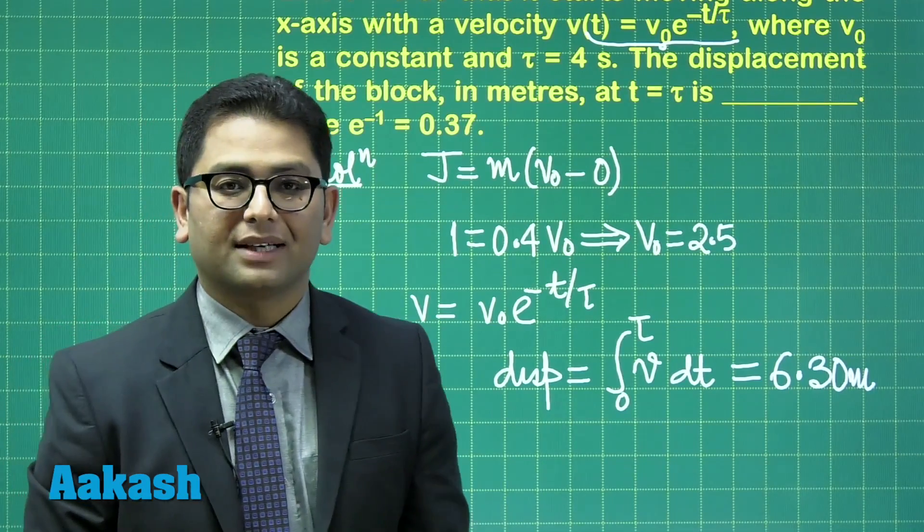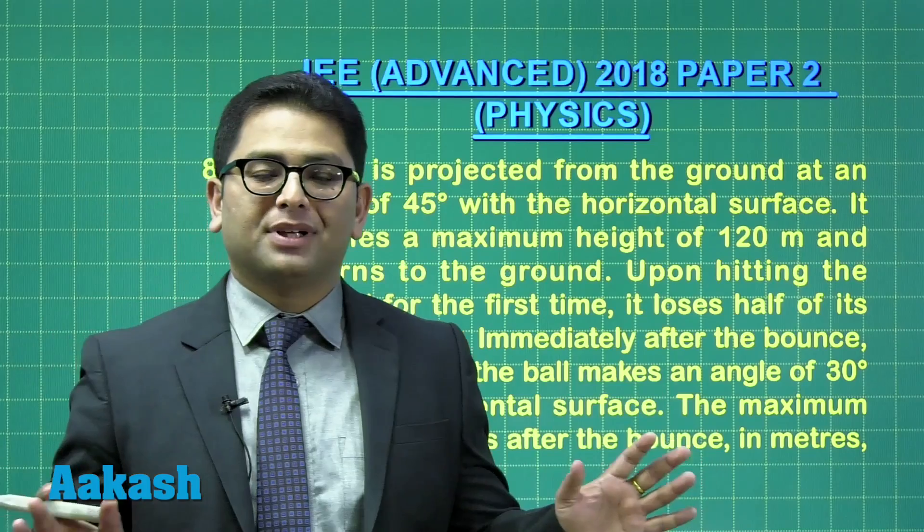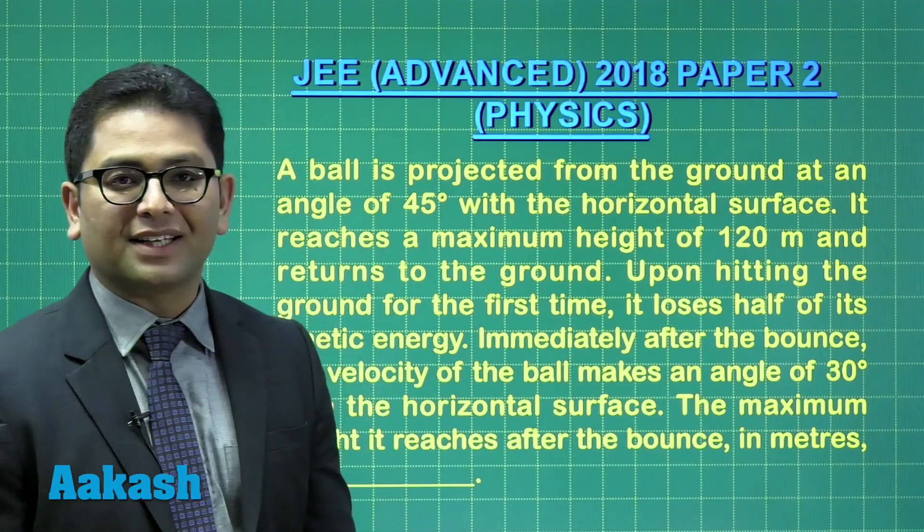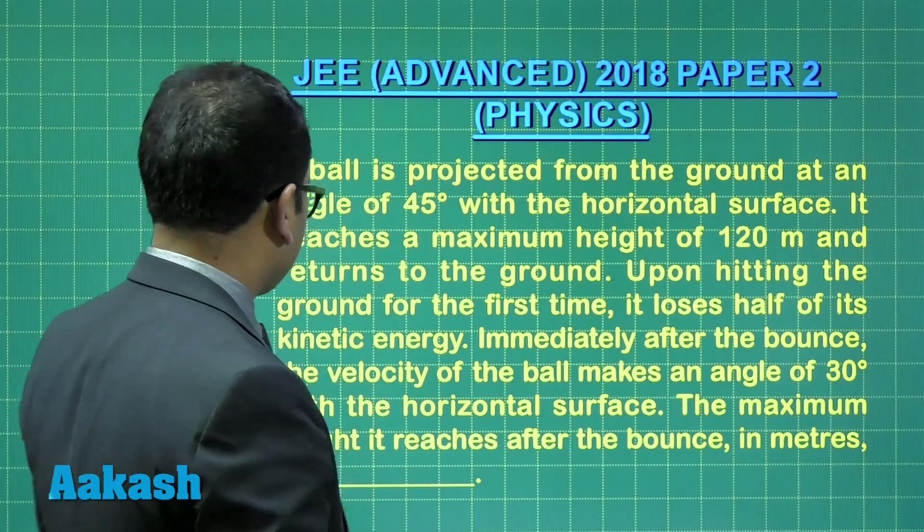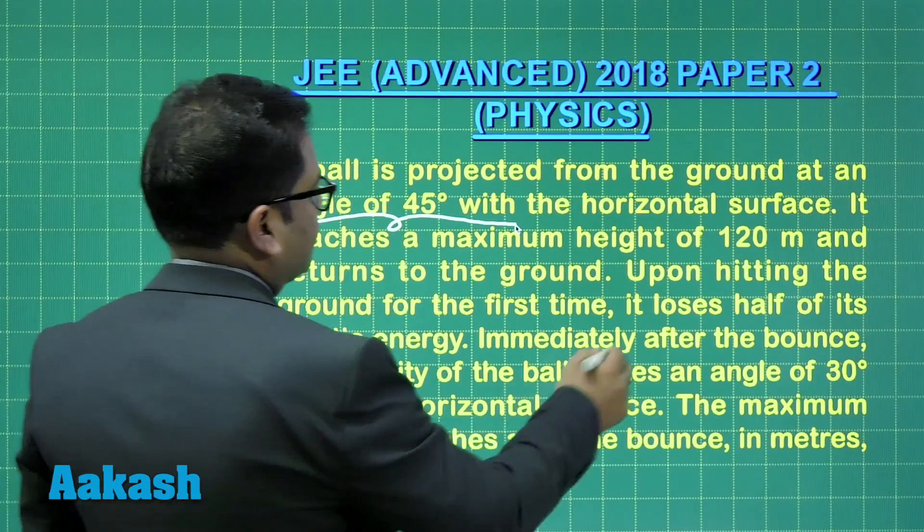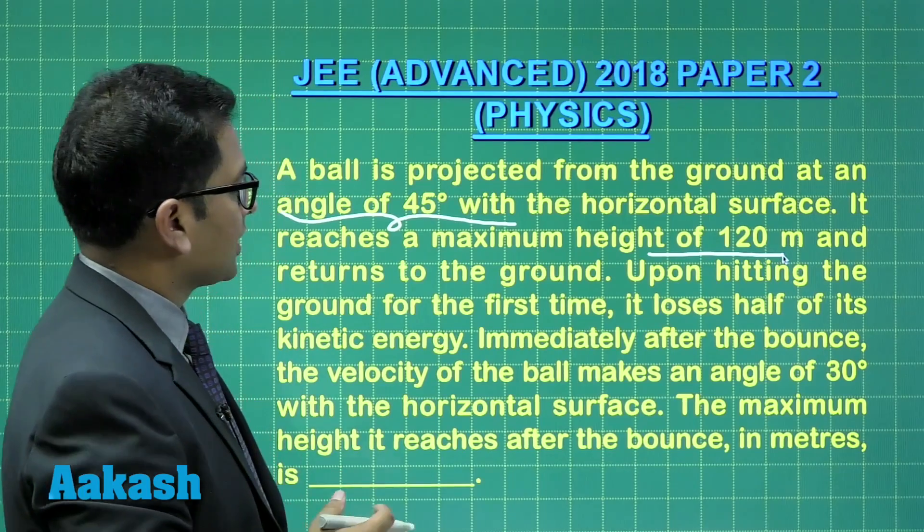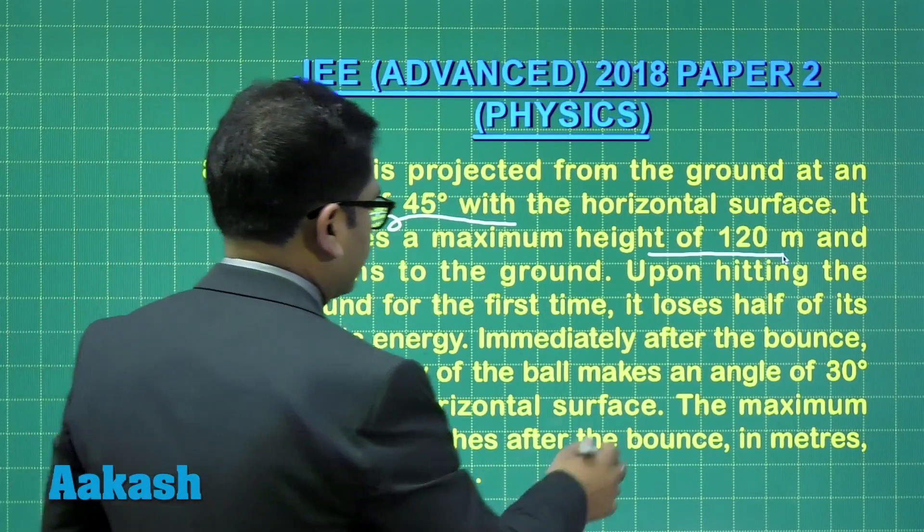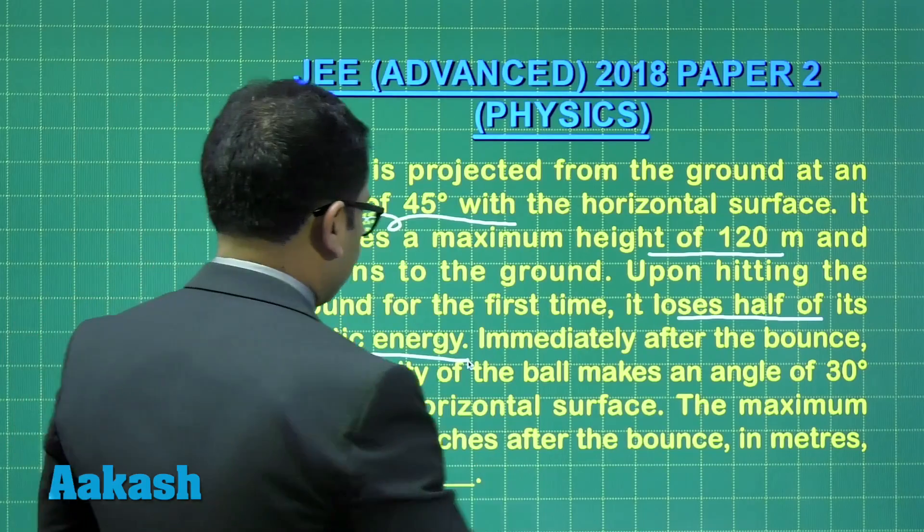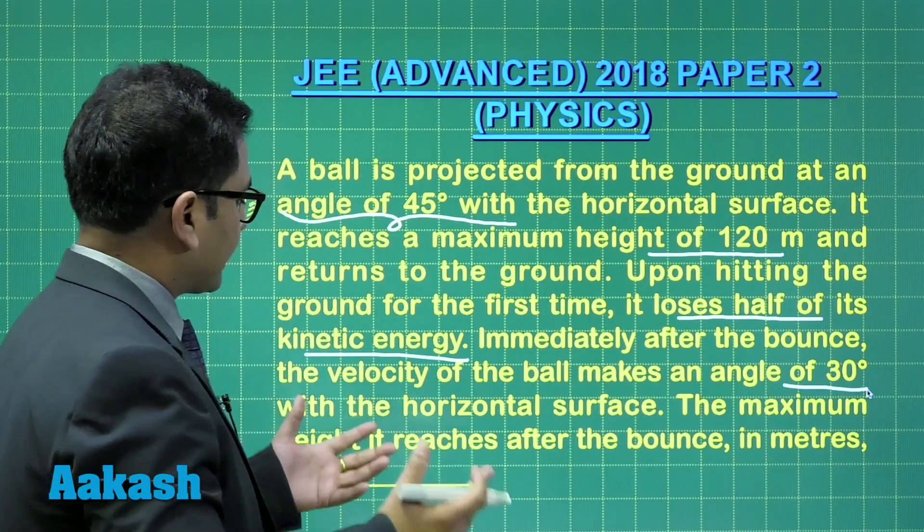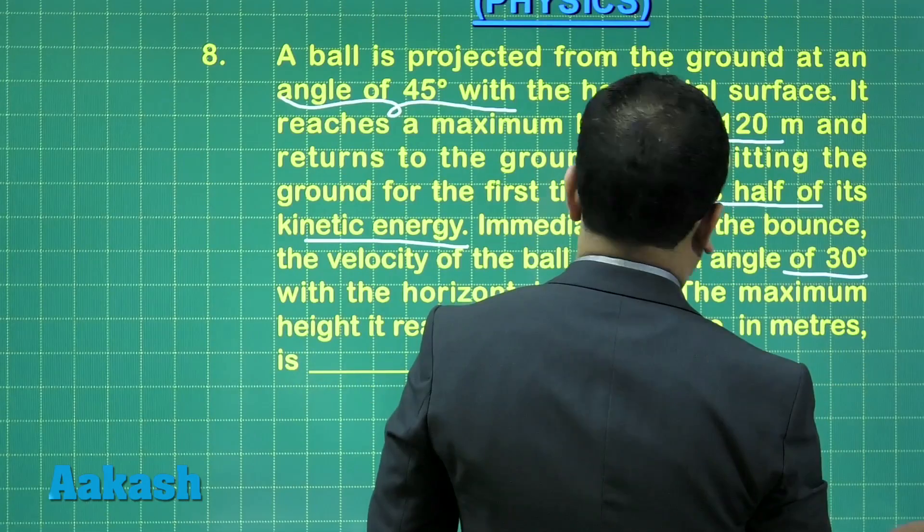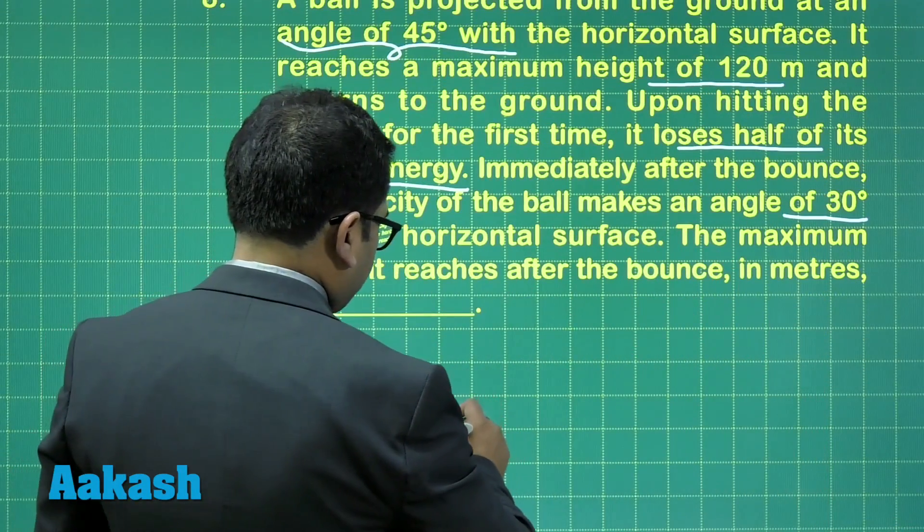All right, now it's time to go to question number 8. Question number 8, a very simple, so it should rather be taken as a compliment and it would be acting as a moral booster for those who were solving in the examination hall. A ball is projected from the ground at an angle of 45 degree with the horizontal. It reaches a maximum height of 120 meter and returns to the ground. Upon hitting the ground for the first time, it loses half of its kinetic energy. Immediately after the bounce, the velocity of the ball makes an angle 30 degree with the horizontal. The maximum height it reaches after the bounce.